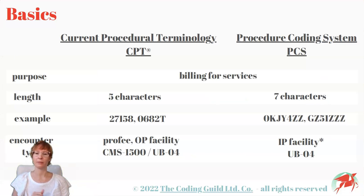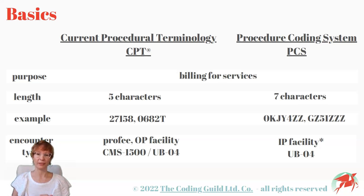First of all, the basics. The purpose of both systems is to get services paid. CPT codes do this with 5 characters, PCS codes with 7. Here you can see some examples of what the codes look like.